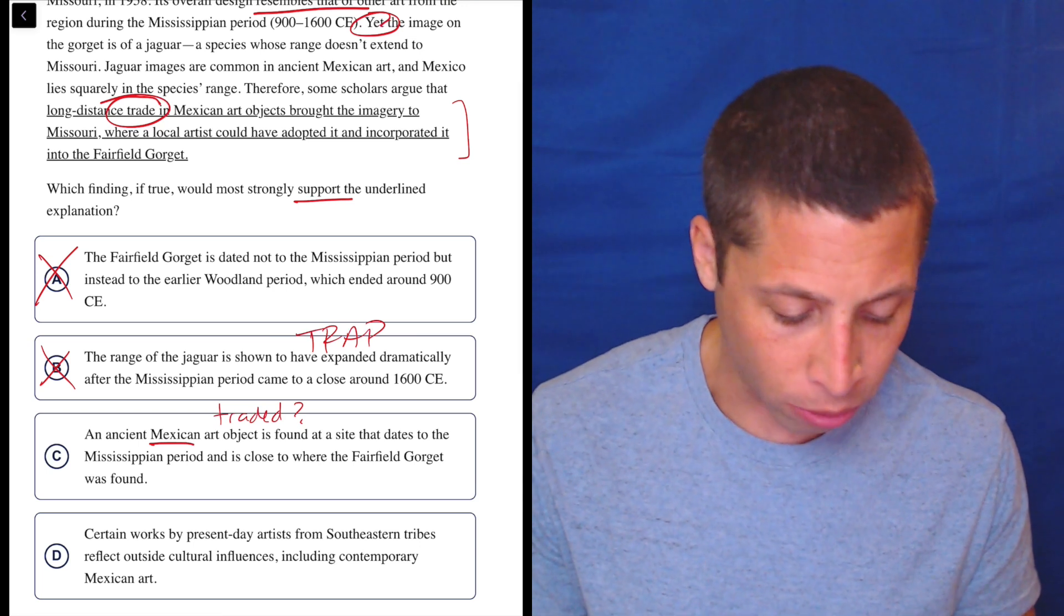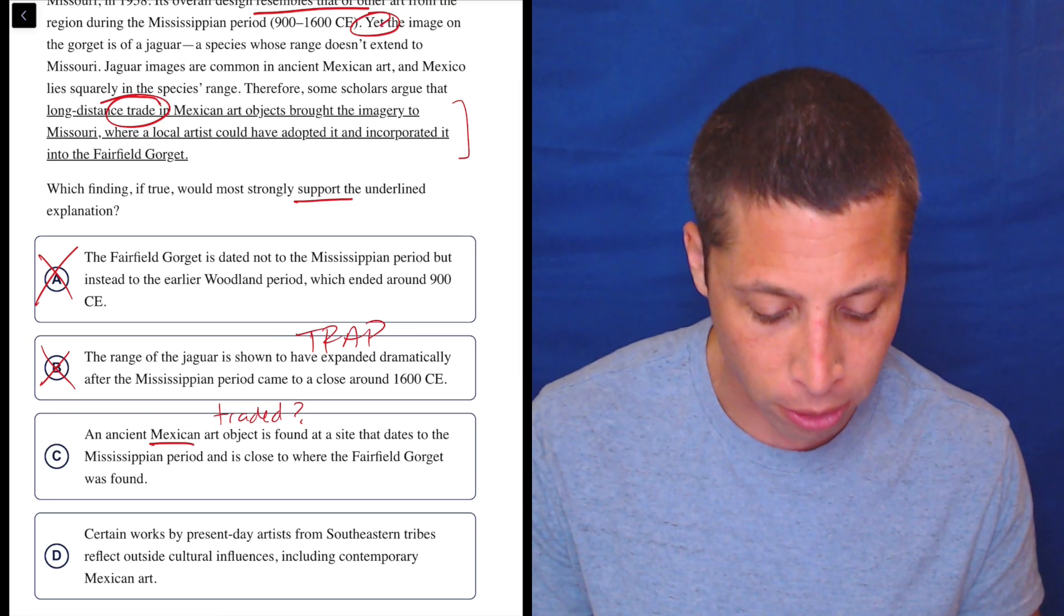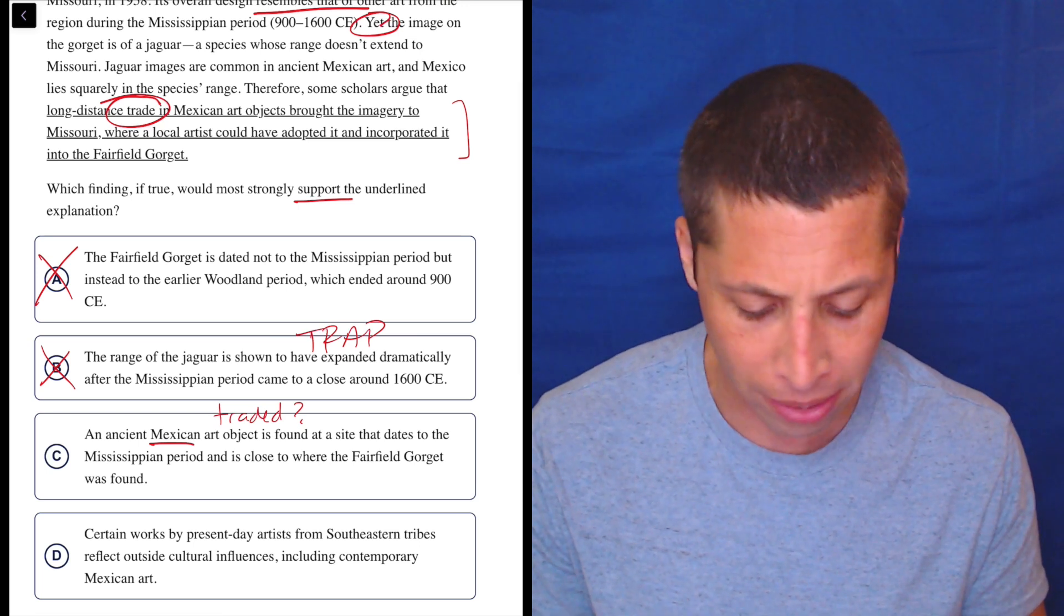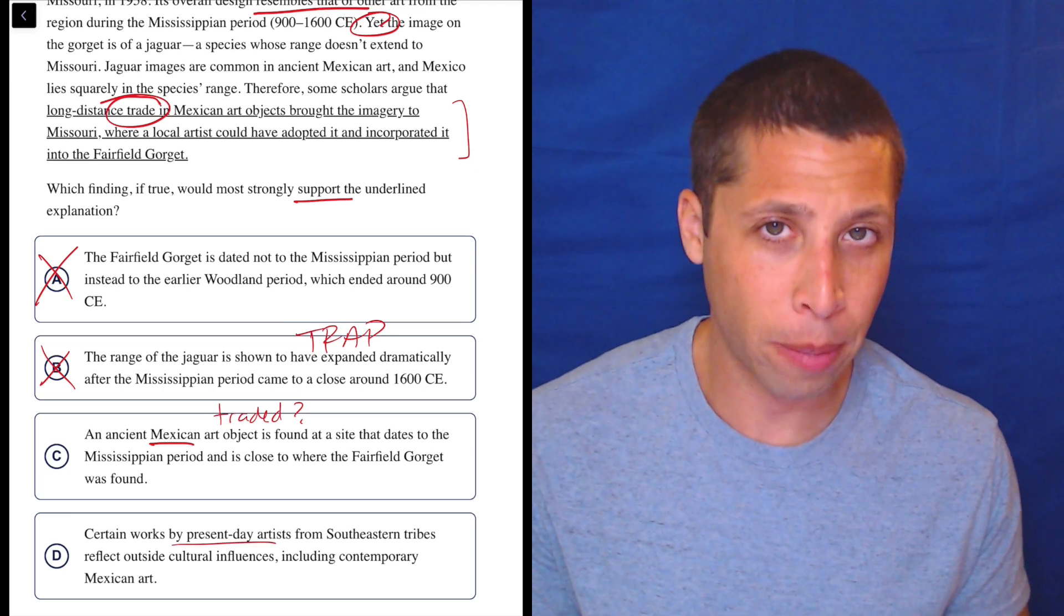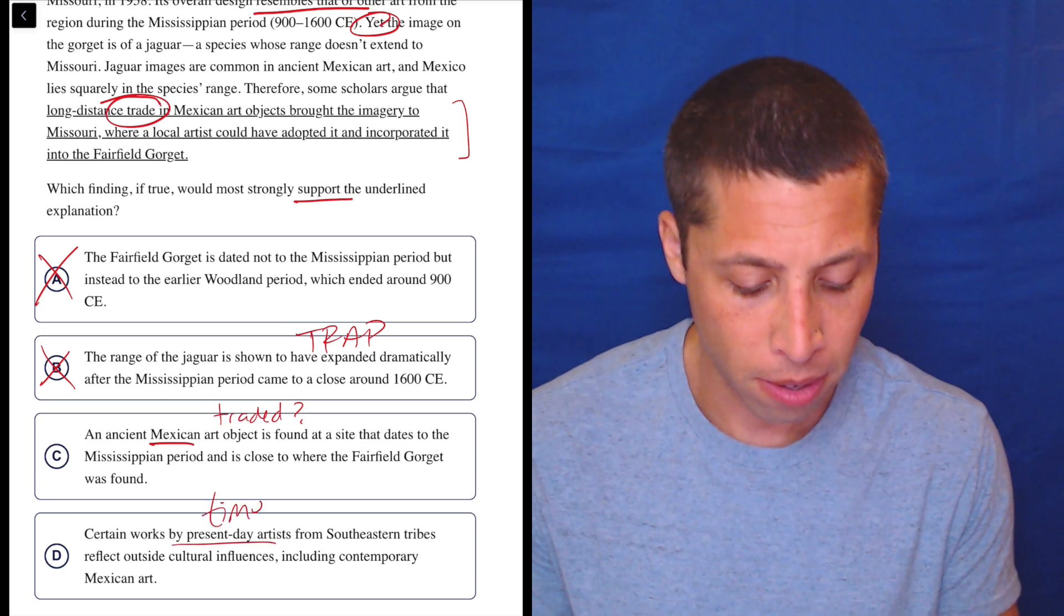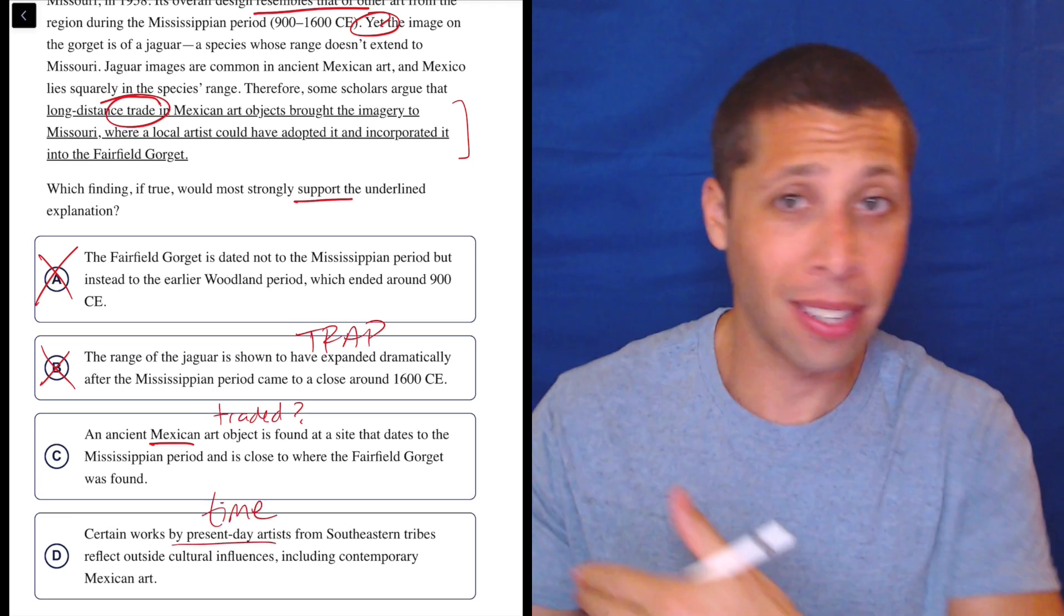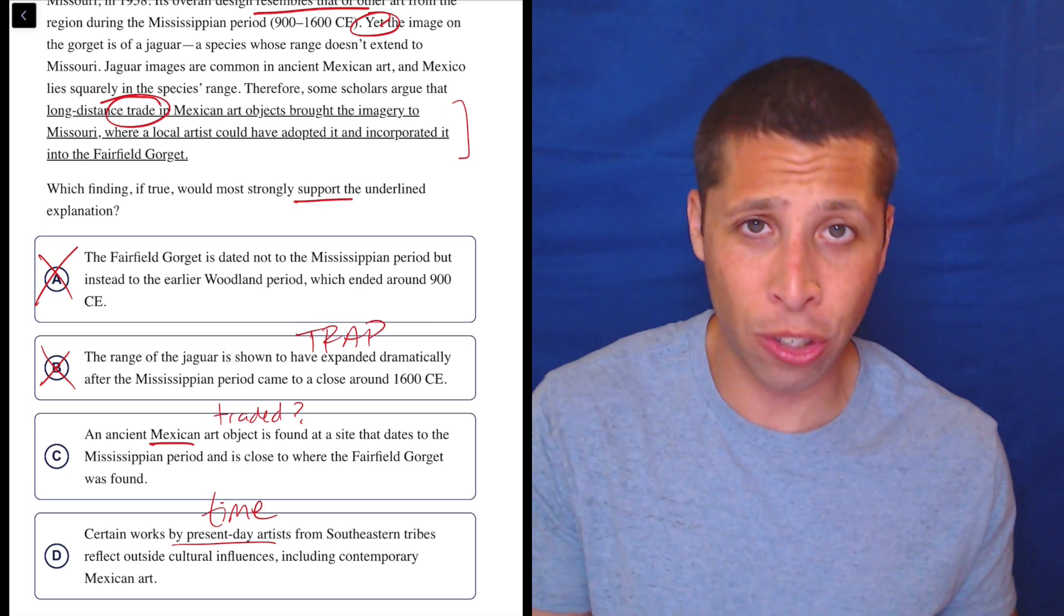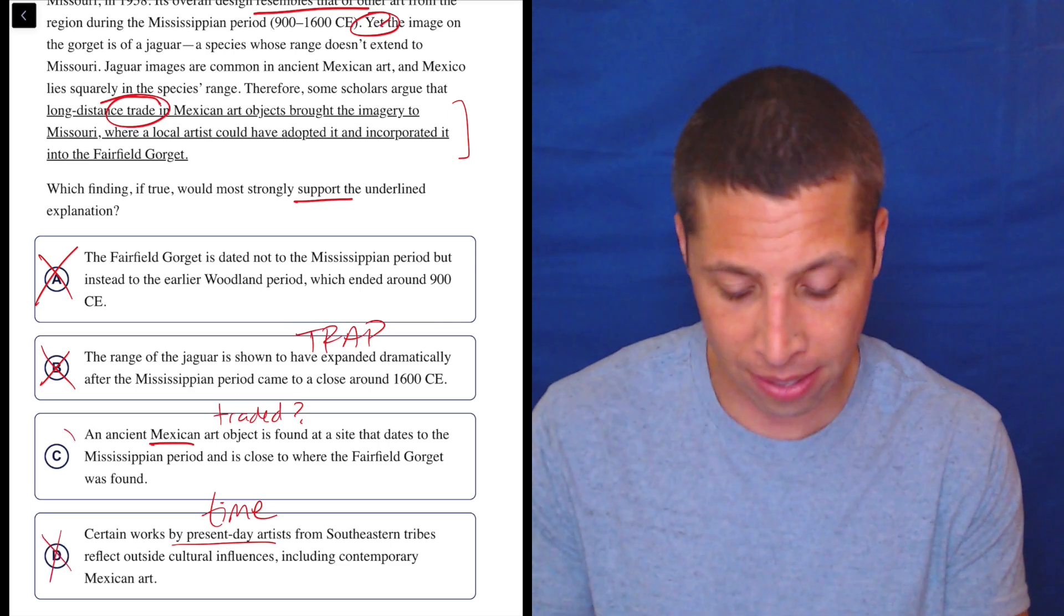Certain works by present-day artists from Southeastern tribes reflect outside cultural influences, including contemporary Mexican art. Well, why do I care about present-day artists, right? This is the wrong time. We got to go back, back in time, not to the present. I don't care if people today know what jaguars are. It doesn't matter.